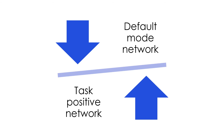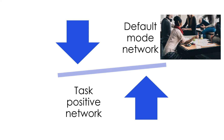I also learned about two brain networks that are antagonistic to each other. A brain network is a set of multiple brain regions. In human brains, the default mode network and task-positive network work like two ends of a seesaw. When the default mode network is activated, the task-positive network is suppressed, and vice versa.